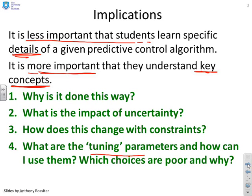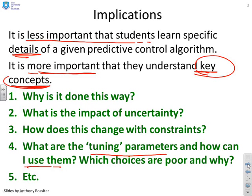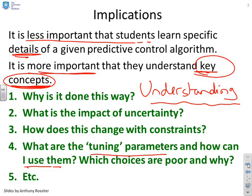What are the tuning parameters and how do I use them? Which choices are poor and why, and how does this change depending on the context? Lots of questions here. You have to focus on the key concepts and critically understanding. If you understand how predictive control works, you're far more likely to make a good implementation.